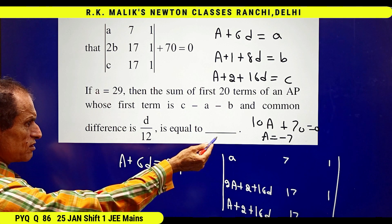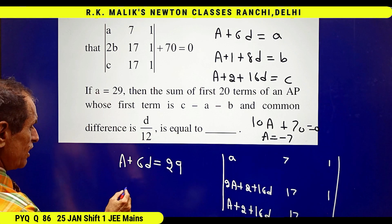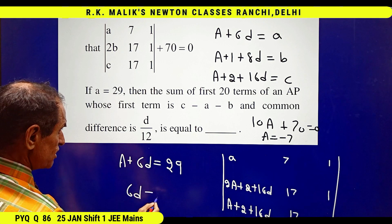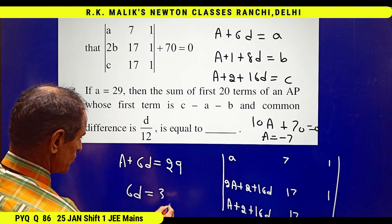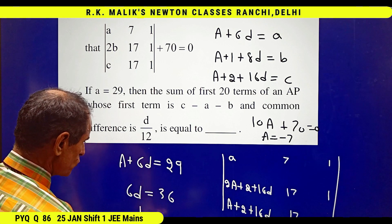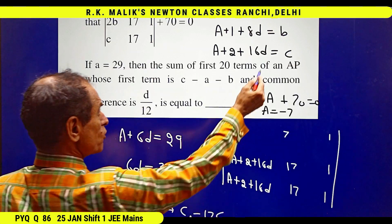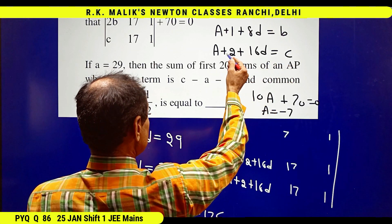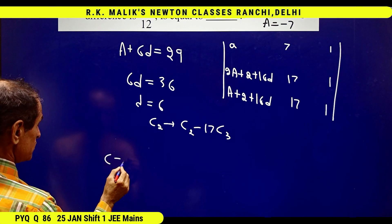Because the value of c is A plus 2 plus 16D, hence c equals A plus 2 plus 16D, which implies c equals minus 7 plus 2 plus 16 times 6.